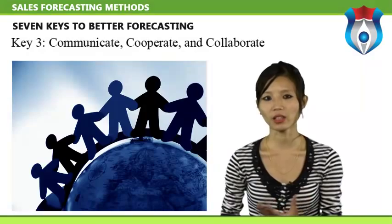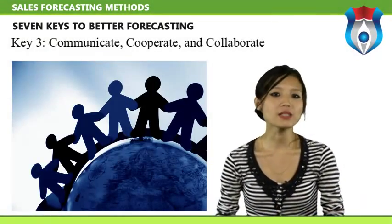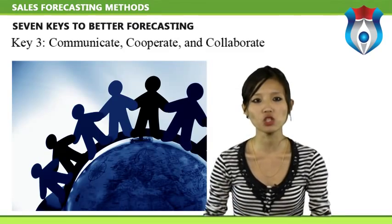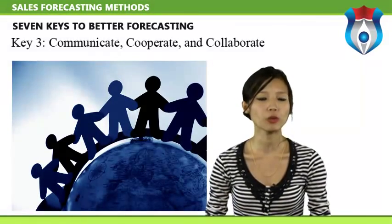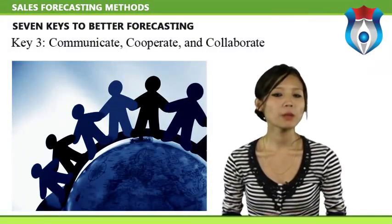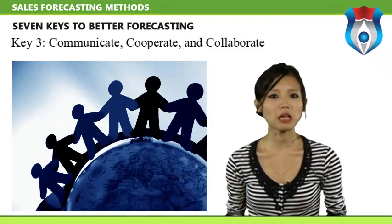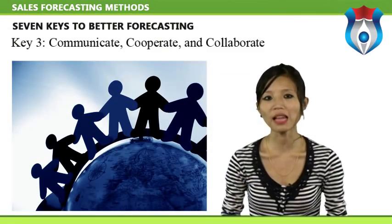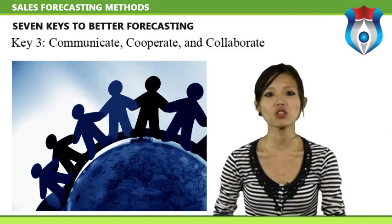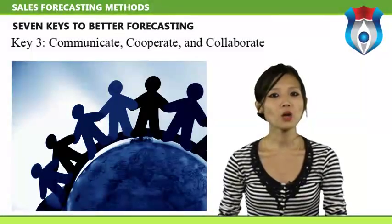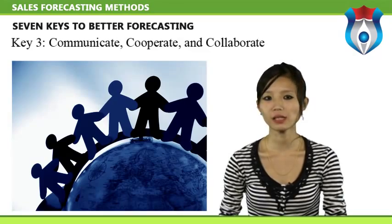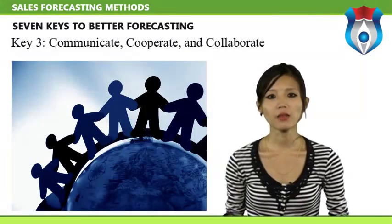Companies that forecast most effectively consider it critical to obtain input from people in different functional areas, each of whom contributes relevant information and insights that can improve overall accuracy. But employees are often unable or unwilling to work across functions to achieve high levels of forecasting performance. Doing so requires a great deal of communication across departmental boundaries, and not all communication is equal — some companies are simply better at it than others.